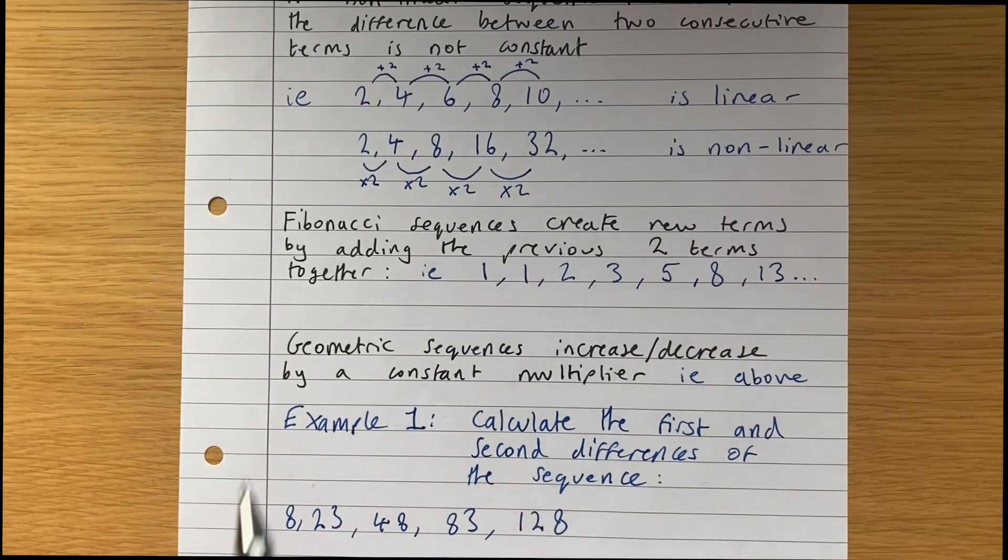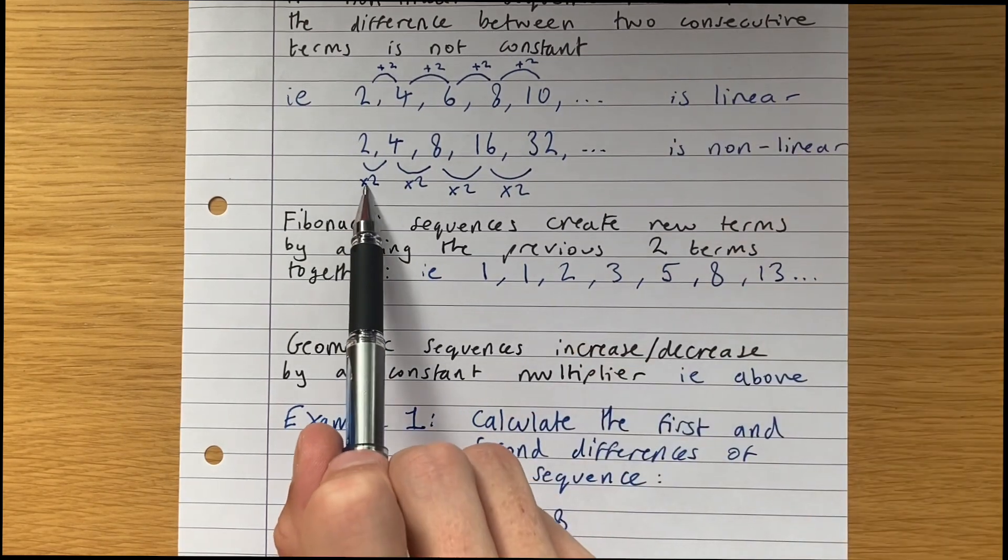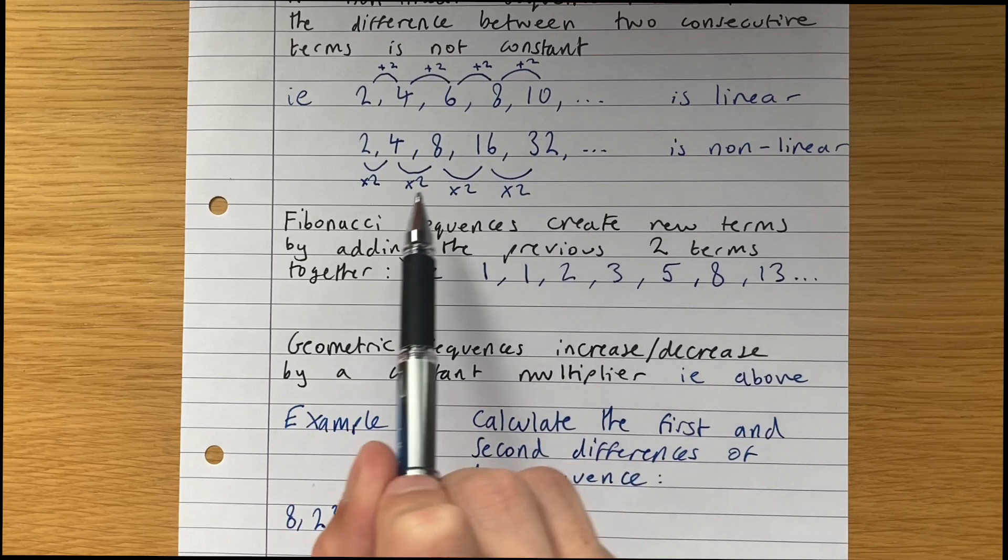Another example is geometric sequences, which increase or decrease by a constant multiplier, i.e. this sequence here is multiplying each term by 2, a constant multiplier.